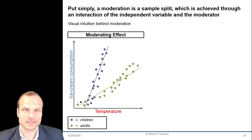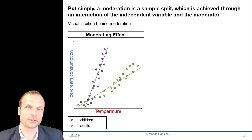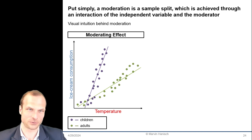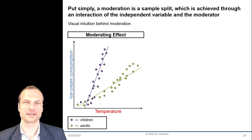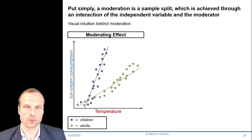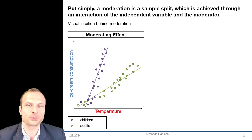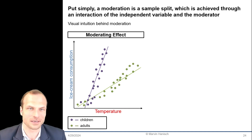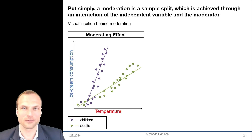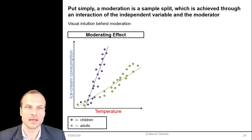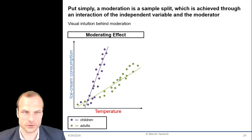Let's use a simple example: temperature, ice cream consumption, and age. Picture this — as temperature rises, kids might devour more ice cream while adults may be able to constrain themselves a little more. We call this difference in the effect of temperature on ice cream consumption in children and adults a moderation.